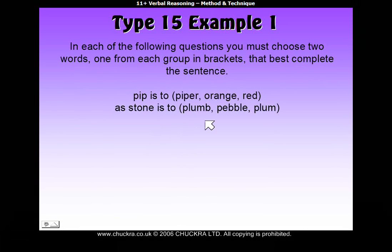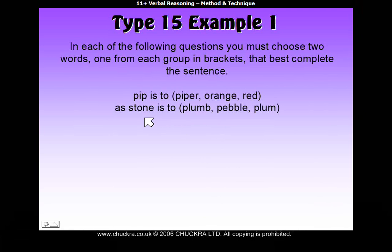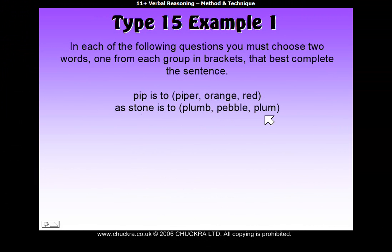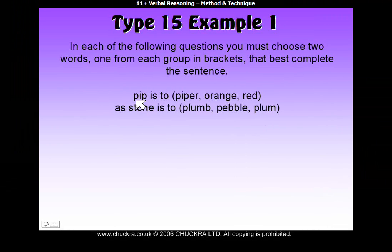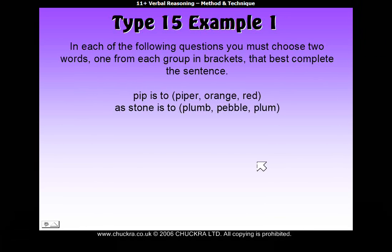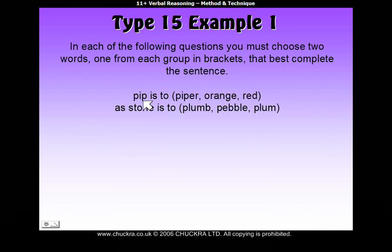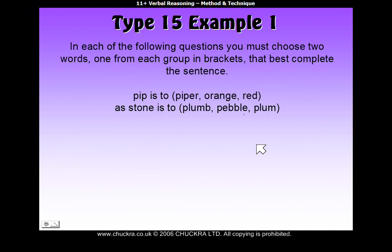Stone and pebble — there is a connection because a pebble is a kind of smooth stone. What about stone and plum? Actually, inside a plum you have a stone. So remember, in the first group we had orange, and an orange contains a pip. Our answer to this question would be: pip is to orange as stone is to plum. On our answer sheet, we would mark down orange and plum.